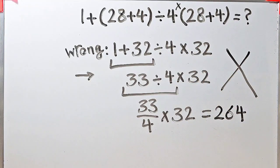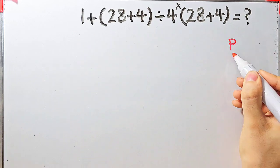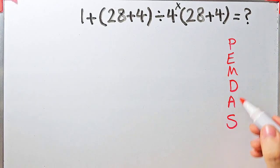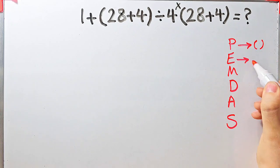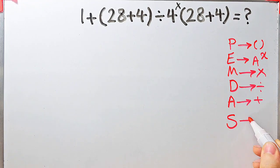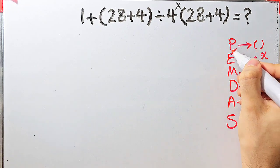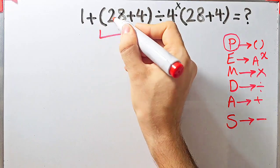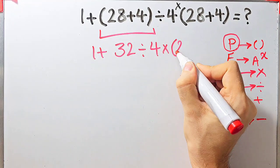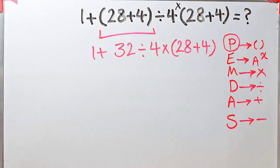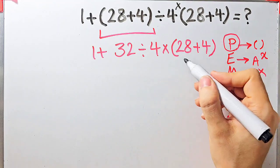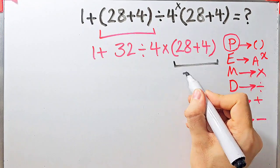To solve this question we need to follow the PEMDAS rule. P stands for parentheses, E for exponent, M for multiplication, D for division, A for addition, and S for subtraction. According to PEMDAS, first we simplify the parentheses. Inside the first parenthesis we have 28 plus 4, which equals 32. Now the question is 1 plus 32 divided by 4, then times open parenthesis 28 plus 4 close parenthesis. We simplify the second parenthesis: 28 plus 4 equals 32.